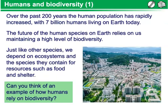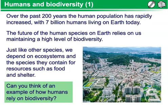We have an interaction with all ecosystems, and we influence biodiversity more so than any other organism on the planet. Over the past 200 years, our population has rapidly increased, with 7 billion humans living on Earth today. The future of the human species on Earth relies on us maintaining a high level of biodiversity. Just like other species, we depend on ecosystems and the species they contain for resources such as food and shelter. Can you think of any examples of how humans rely on biodiversity?